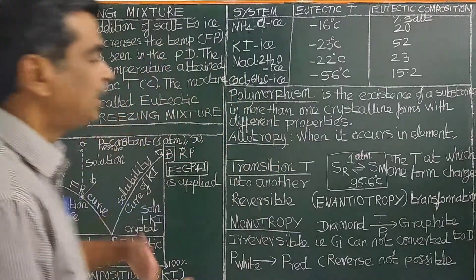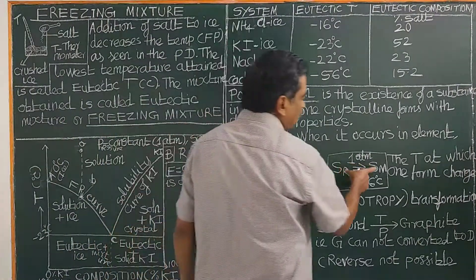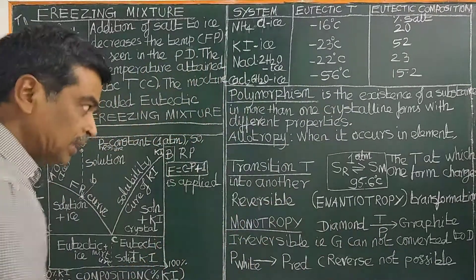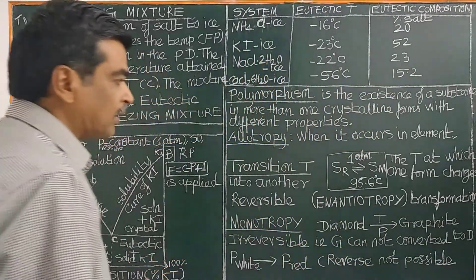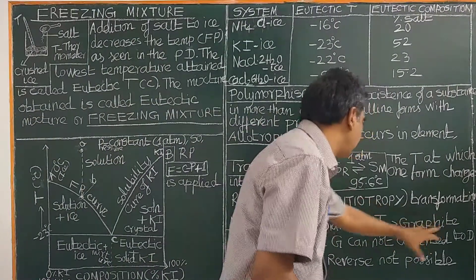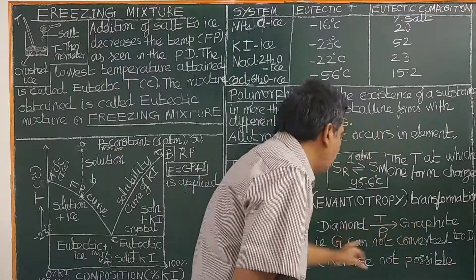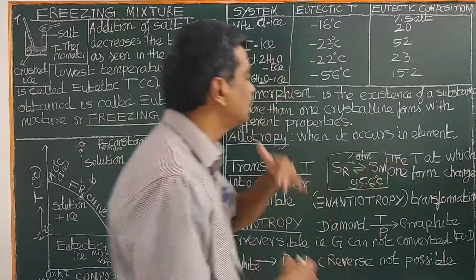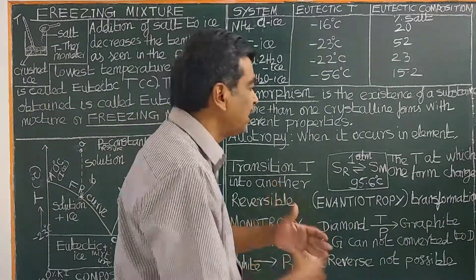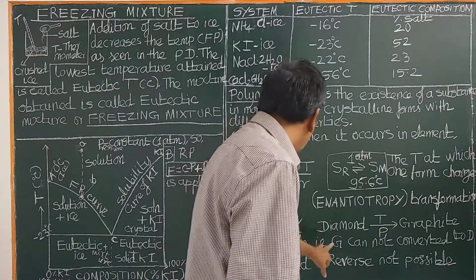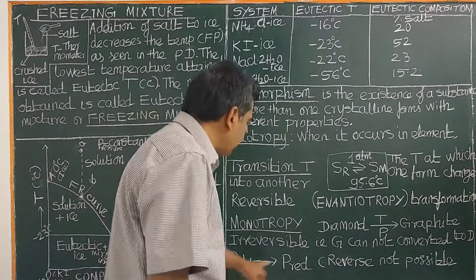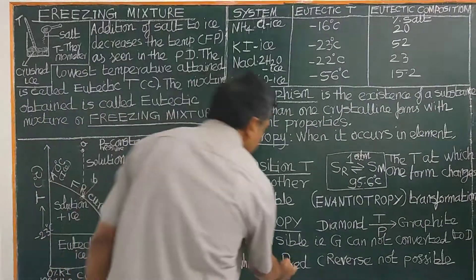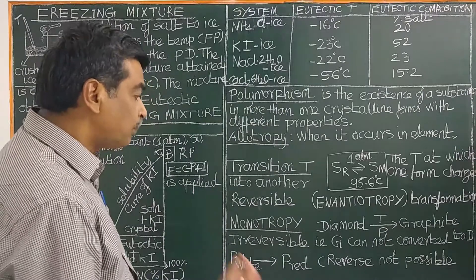What is monotropy? It is the opposite — if the allotropic transformation process is irreversible, it is called monotropy. For example, diamond, under certain conditions of temperature and pressure, is converted into graphite. But this is irreversible — graphite cannot be converted back to diamond. Another example is white phosphorus: white phosphorus is converted into red phosphorus under certain conditions, but red phosphorus cannot be converted back to white phosphorus. This irreversible process is called monotropy.